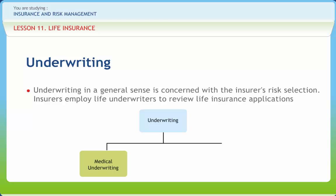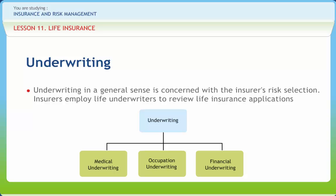Information such as family history and personal medical history will be sought in this phase. In occupation or lifestyle underwriting, the underwriter also requires basic information about activities undertaken for employment or enjoyment. Risky jobs include the armed services, pilots and construction. Activities that are considered hazardous include racing and skydiving. Financial underwriting involves the policy owner and insured, if the two are different people. It is used to detect moral hazard and also to ensure that people don't speculate on their own lives.